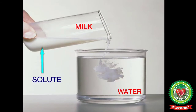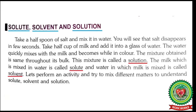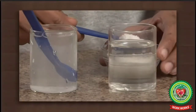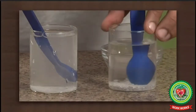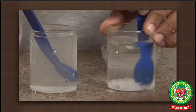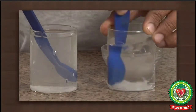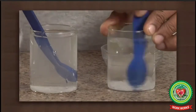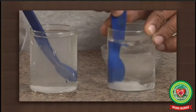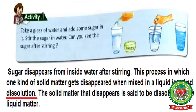Now let's perform an activity to understand solute, solvent, and solution. Take a glass of water and add some sugar to it. Stir the sugar in the water — can you see the sugar after stirring? The sugar disappears inside the water after stirring.